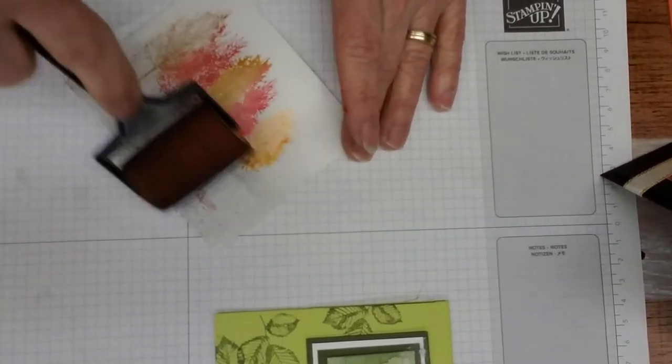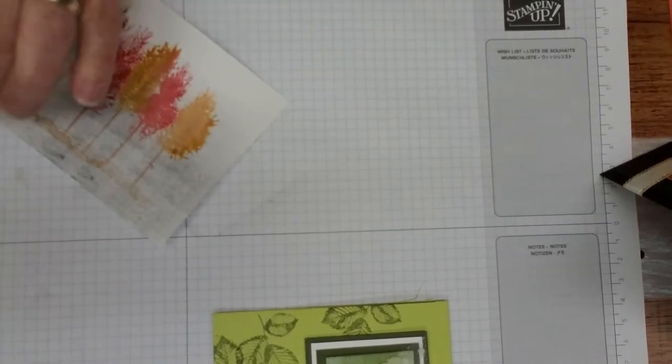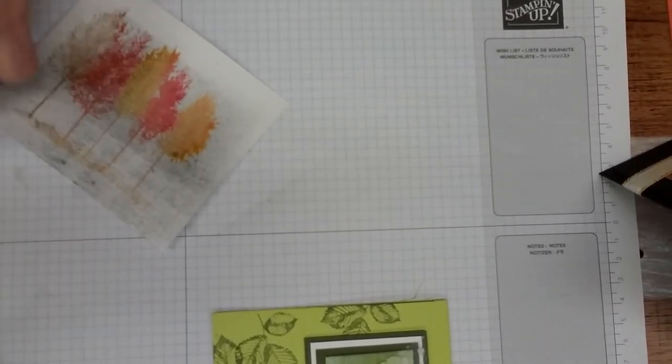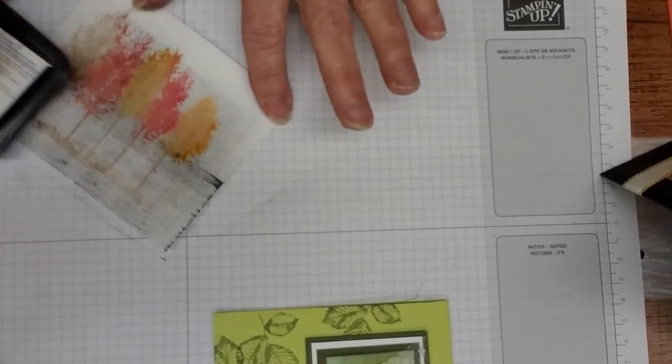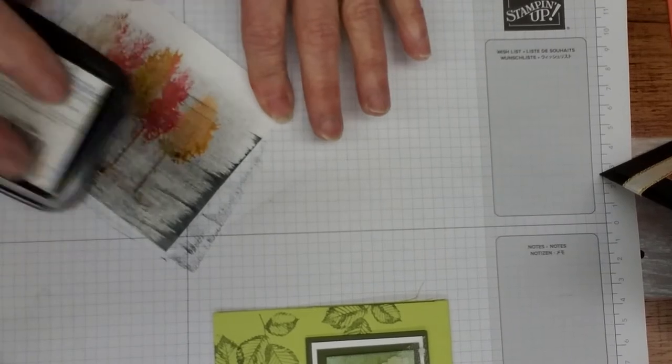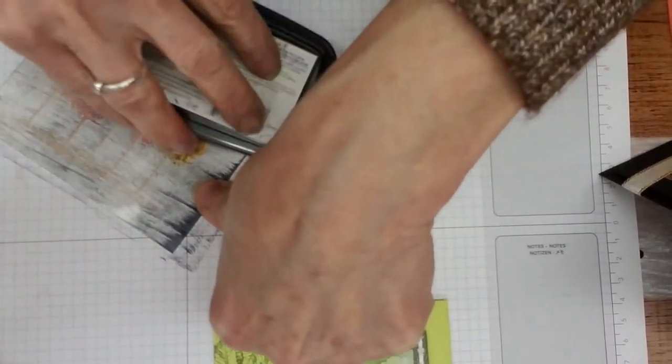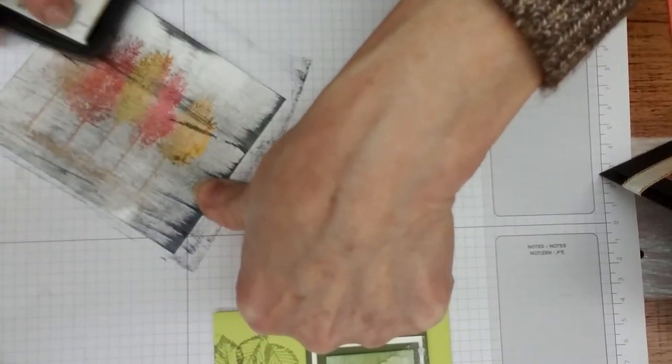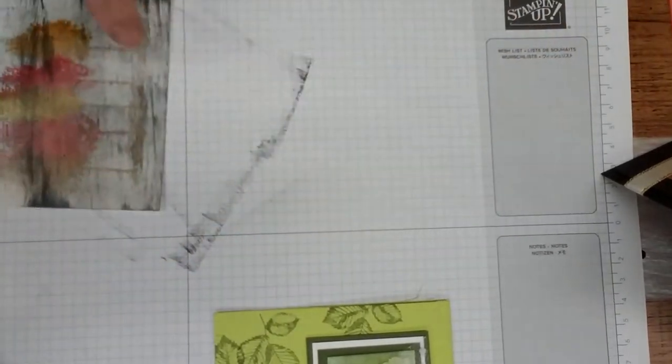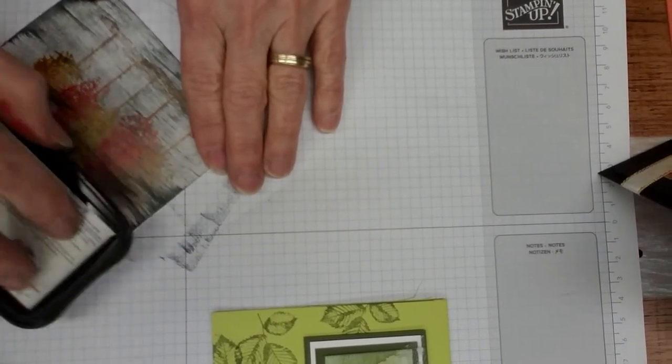But this takes a while and I am very impatient. I don't like waiting. So I just took the stamp pad and I dragged it across. You're probably going, oh my goodness, what is she doing? That is going to be so ugly. But it's not. It's going to look pretty. You could do the same thing with an early espresso pad and go across that till you got the coverage that you wanted.